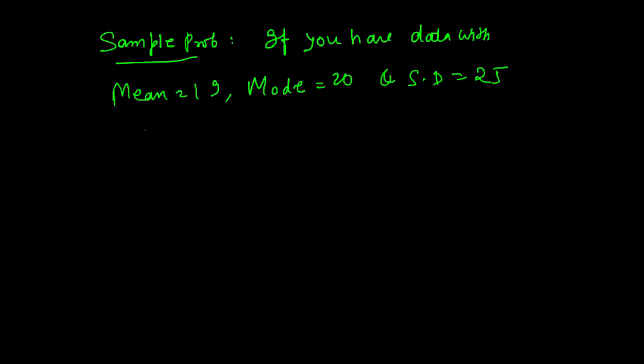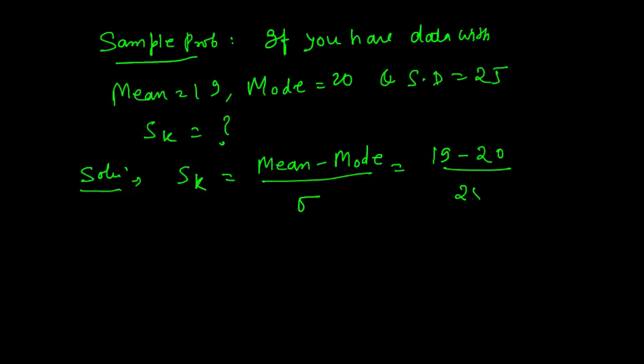The solution: Karl Pearson's coefficient of skewness SK equals mean minus mode divided by sigma. So SK equals 19 minus 20, divided by 25. Therefore, the skewness value equals negative 0.04.